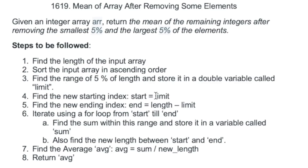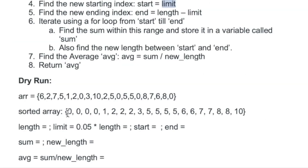The new start index can be found using the limit value. On the sorted array, the new start index is found by removing the smallest five percent, and the new end index by removing the last five percent — which is the length of the array minus the limit. In between these two intervals, find the sum and divide it by the new length to calculate the average.